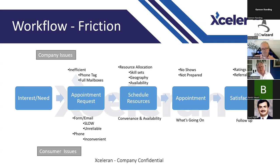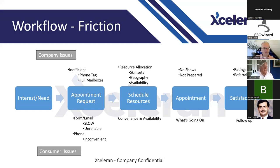The second stage is scheduling resources. From the customer side, it's less of an issue — they just care about availability and convenience. On the business side, it's a significant issue: you've got limited resources with different skill sets, geographic issues if you're in a trade service business, and people with varying availability. This is the biggest reason we hear companies not wanting to do automated scheduling — 'My business is too complicated.'